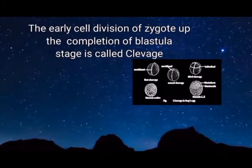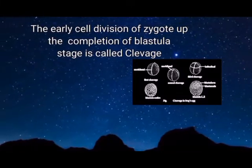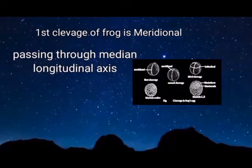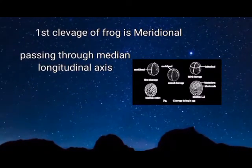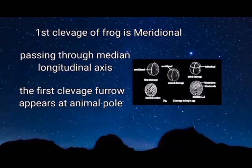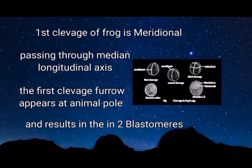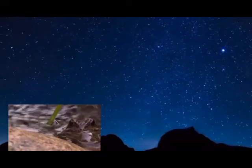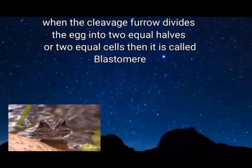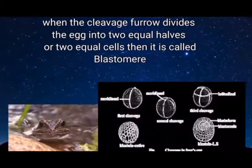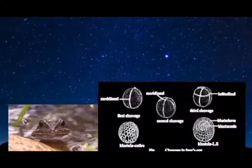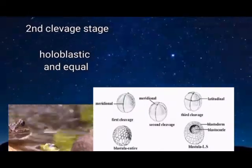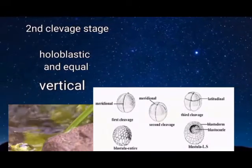The fusion of male and female gametes forms the zygote, and the early cell division of the zygote up to the completion of blastula stage is called cleavage. The first cleavage of frog is meridional, passing through the median longitudinal axis. The first cleavage furrow appears at the animal pole and results in two blastomeres — right and left. The second cleavage stage is also holoblastic and equal, as well as vertical like the first cleavage, but at right angles to it, resulting in four equal blastomeres.